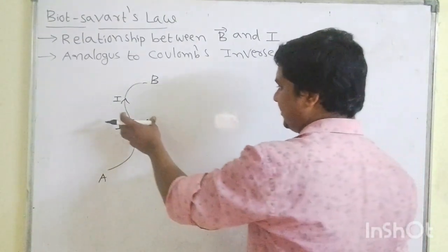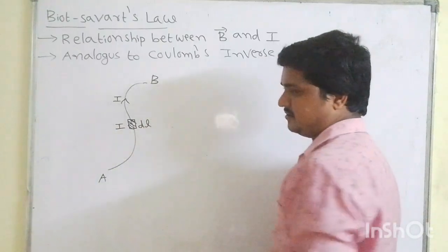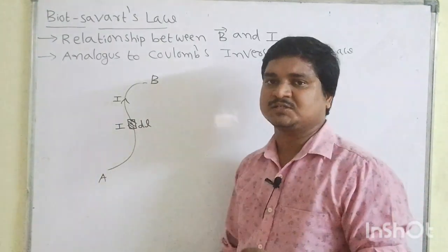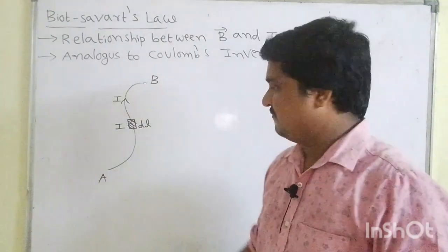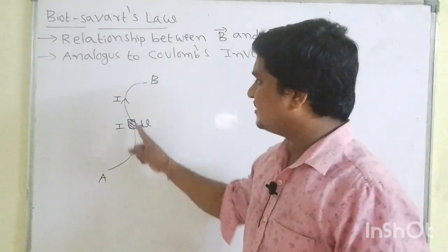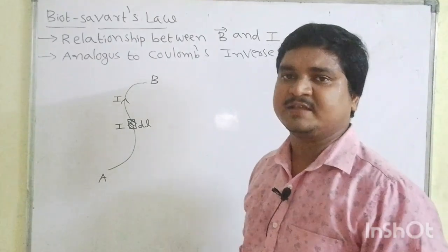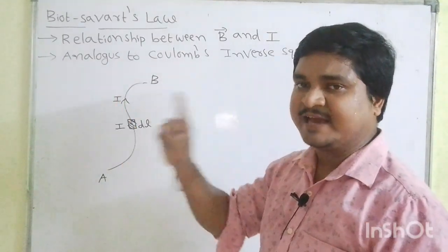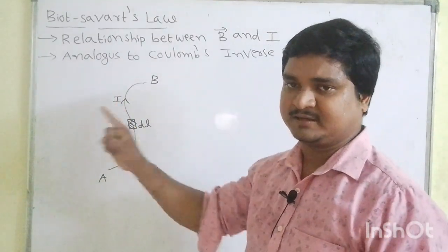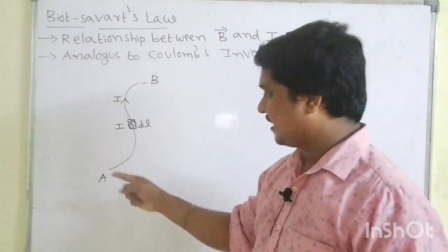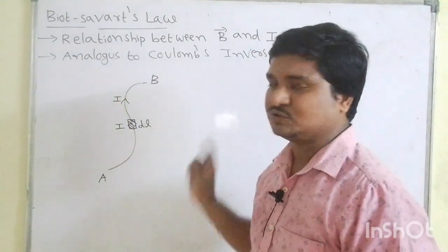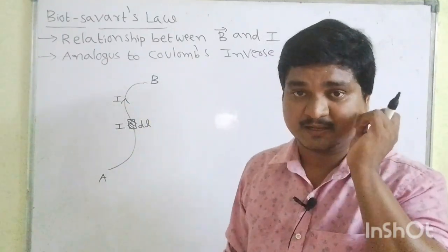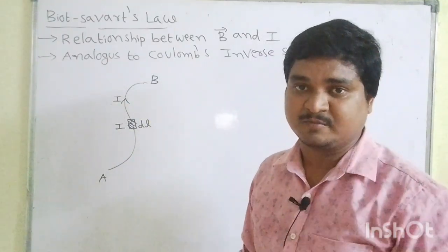Based upon this current element, we already know from Oersted's experiment: whenever current passes through a conductor, there will definitely be a magnetic field around the conductor. In a current carrying conductor, a magnetic field is generated.